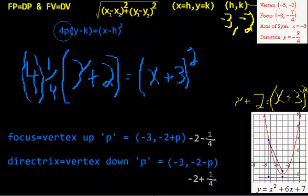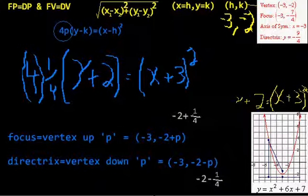Common denominator, this would be minus 8 fourths, minus 8 over 4. Let me just pause it and put it in.